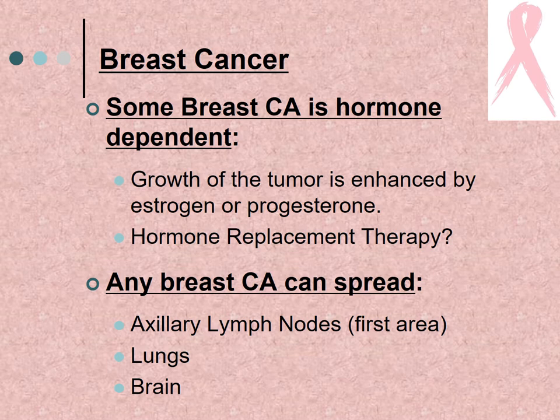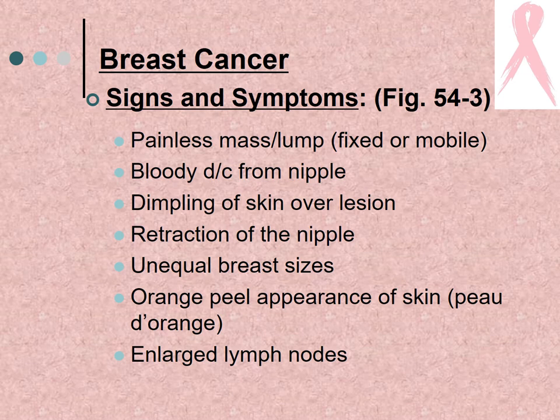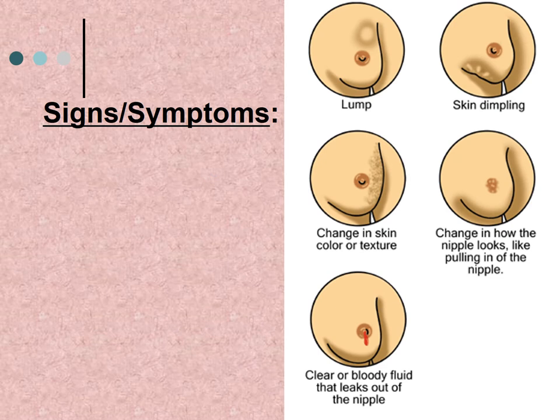Some breast cancer is hormone dependent — the growth of the tumor is enhanced by estrogen or progesterone, which is why we are concerned about hormone replacement therapy. Any breast cancer can spread, going first to the axillary lymph nodes and then potentially to the lungs or brain. Signs and symptoms include a painless mass or lump that is fixed or mobile, bloody nipple discharge, dimpling of the skin over the lesion, nipple retraction, unequal breast sizes, an orange peel appearance to the skin called peau d'orange, and enlarged lymph nodes.